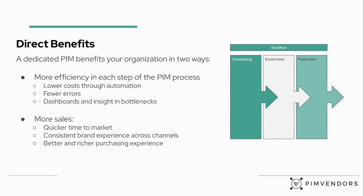Another direct benefit is an increase in sales. Because you have a quicker time to market — less time spent on onboarding, enriching, and publishing products — you are able to sell them quicker. You will have a consistent brand experience across channels, so you will have the same product information on every step of the customer journey, which increases trust and conversion, because customers don't see three different images of your product on three different channels. And because you can spend more time enriching a product, you'll have a better and richer purchasing experience, which will increase conversion as well.